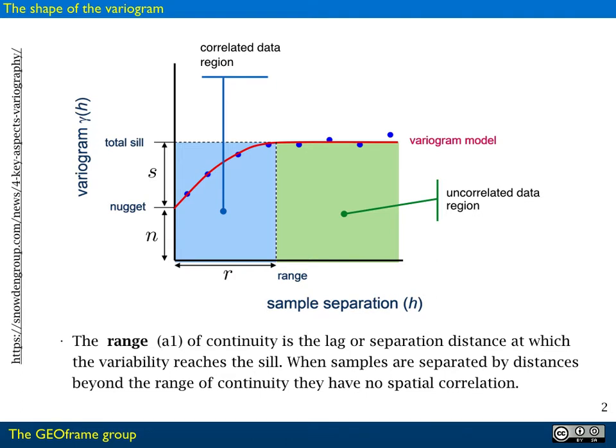We recognize a nugget, a sill, a range, and the total sill shows more or less the total variance of the data.